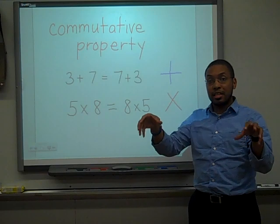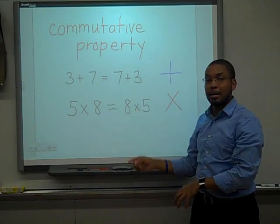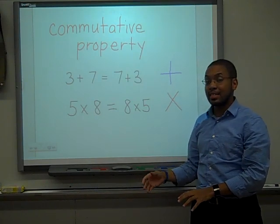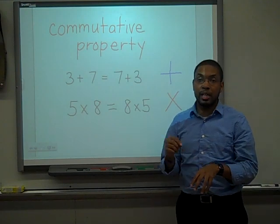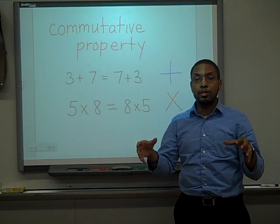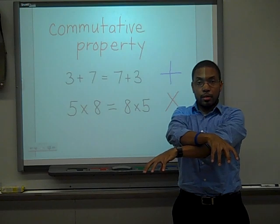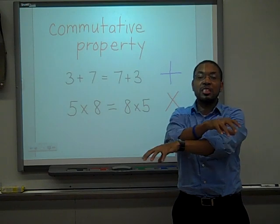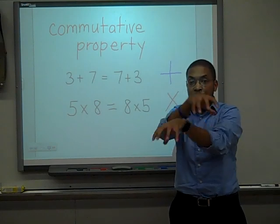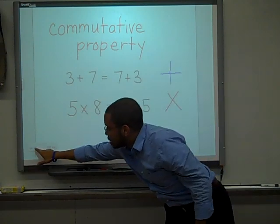5 times 8 — if I just change the order of the factors, which are numbers that we use to multiply, I'll get 8 times 5. 5 times 8 is 40, and 8 times 5 is 40. So changing the order does not change the result. A good way to remember the commutative property is: if you change the order of the numbers, the result still stays the same. The key word there is order — all I'm doing is changing the place of where the numbers are located.